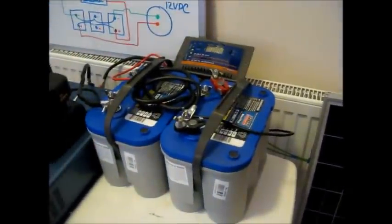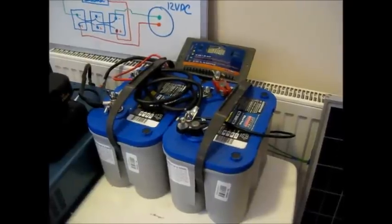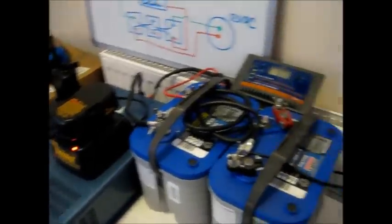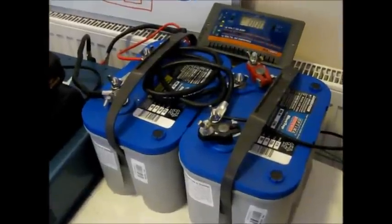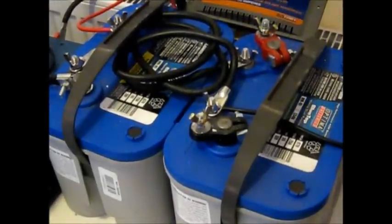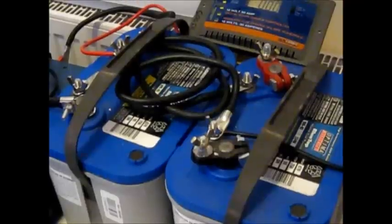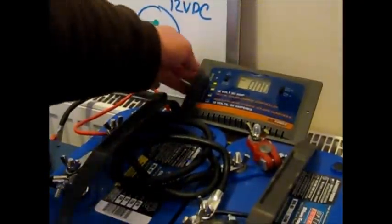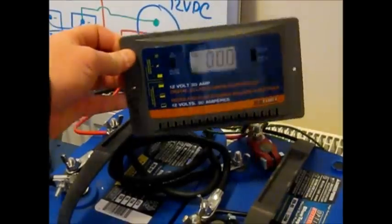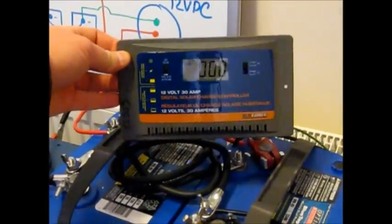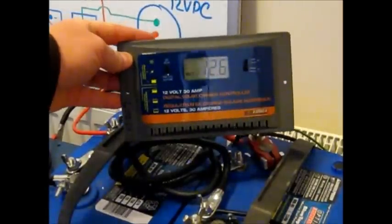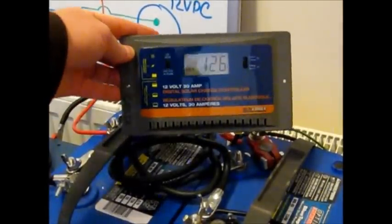And then over here, I have two GelCell DeepCycle Optimus batteries. I'm going to try to get in here a little closer without wiggling the camera too much. And these are connected in parallel. And these batteries are being fed by the Sunforce charge controller that I got on the internet. Let me see if I throw a switch here. So it's a voltage reading saying that the batteries are at 12.6 volts.